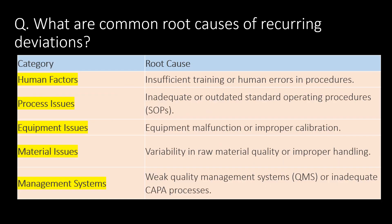This is a very frequently asked question: what are common root causes of recurring deviations? You can refer to the following categories. Under human factors: insufficient training or human errors in procedures. Under process issues: inadequate or outdated SOPs. Under equipment issues: equipment malfunction or improper calibration. Under material issues: variability in raw material quality or improper handling.